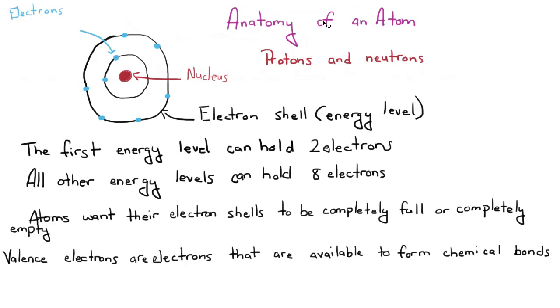This is the basic anatomy of an atom. You've got the nucleus, which houses protons and neutrons. You've got energy shells, or electron shells, energy levels, surrounding, orbiting the nucleus. And then you've got electrons, which are located on these energy levels that are orbiting the nucleus.